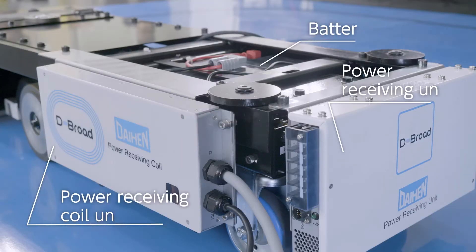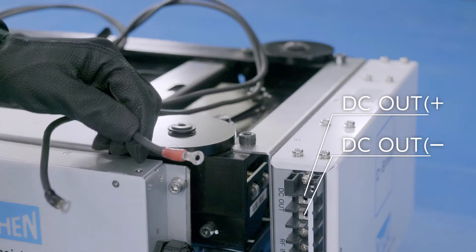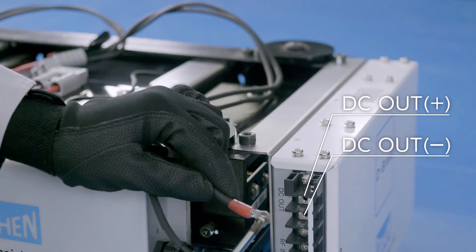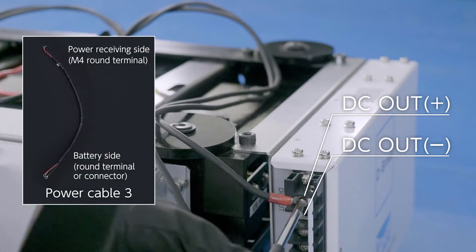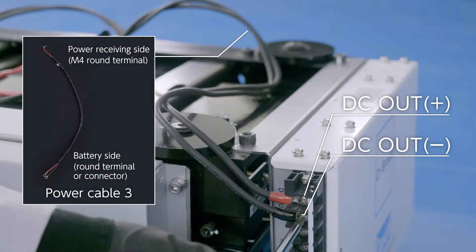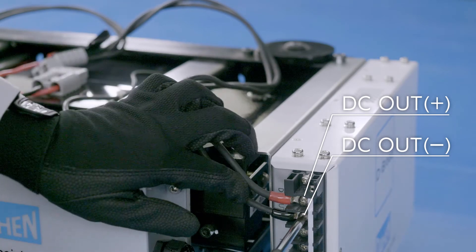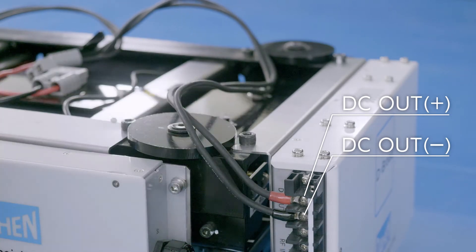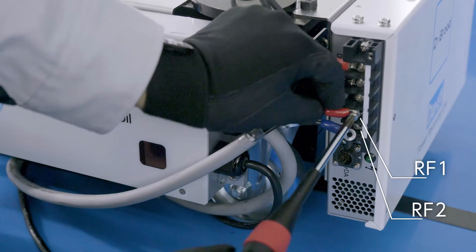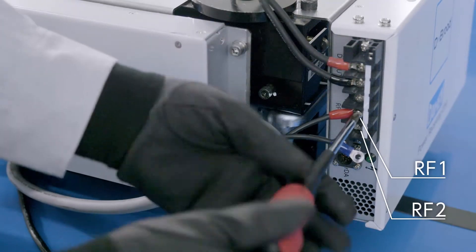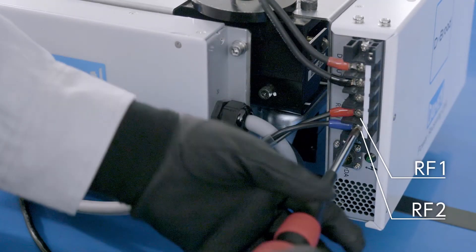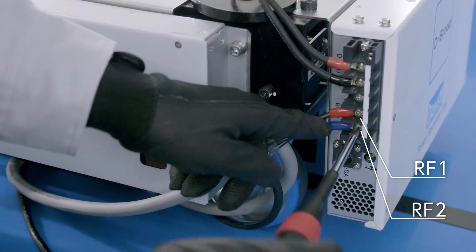Connect the power receiving unit to the battery and then connect the power receiving unit to the power receiving coil unit. Connect the power receiving unit to the battery with power cable 3, which is prepared by the customer. Connect the power receiving unit to the power receiving coil unit using two cables, power cable 2 and control cable 2.